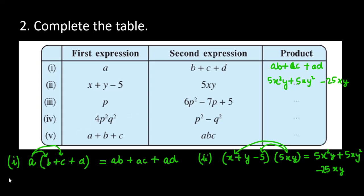Next is, third part is P into 6P square minus 7P plus 5. अब आप क्या करोगे, P को मडिप्लाय करोगे 6P square के साथ, so it will be 6P cube. P को मडिप्लाय करोगे 7P के साथ, 7P square, last one will be 5P.